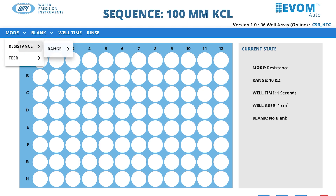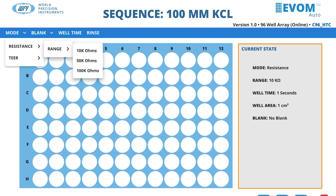When you select the Mode Resistance Range, you can choose the resistance range for making measurements. Options include 10k ohms, 50k ohms, and 100k ohms. The current state area on the right side of the window updates accordingly.